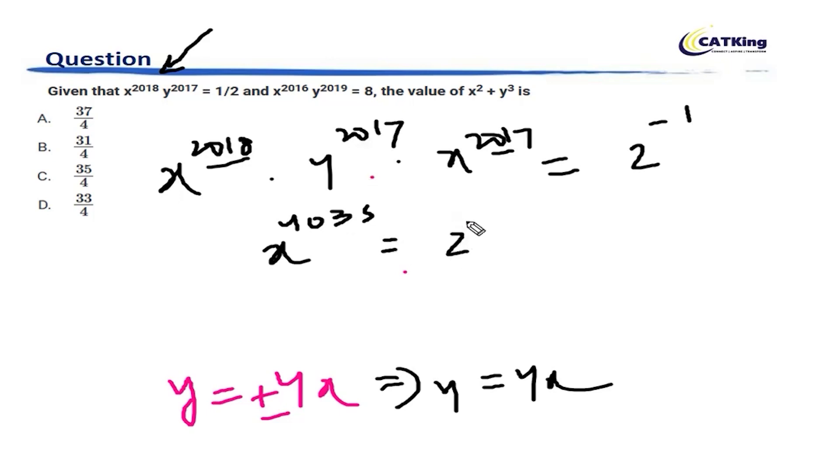If I move to the other side becomes 2 to the power minus 1 into 2 to the power, 4 to the power 2017 becomes 2 to the power 4034. Moving to the other side becomes minus 4034. So, x to the power 4035 is equal to 2 to the power minus 4035. So, what do we know from here? We clearly know that x is equal to 2 to the power minus 1.